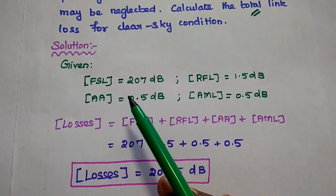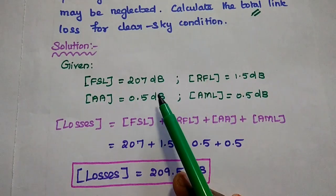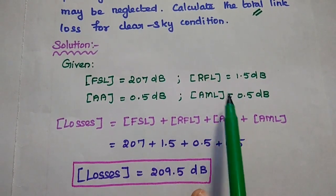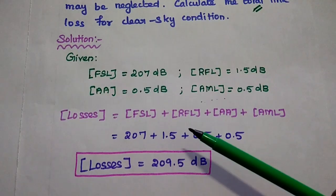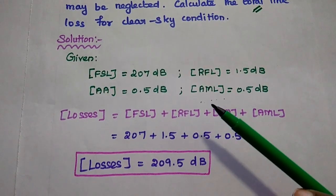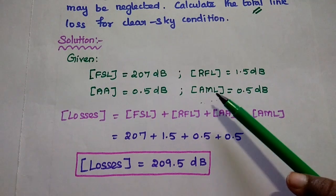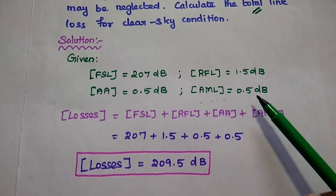The free space loss is 207 dB. The receiver feeder loss is 1.5 dB. The atmospheric absorption loss is 0.5 dB. Antenna pointing loss, also known as antenna misalignment loss, is equal to 0.5 dB.